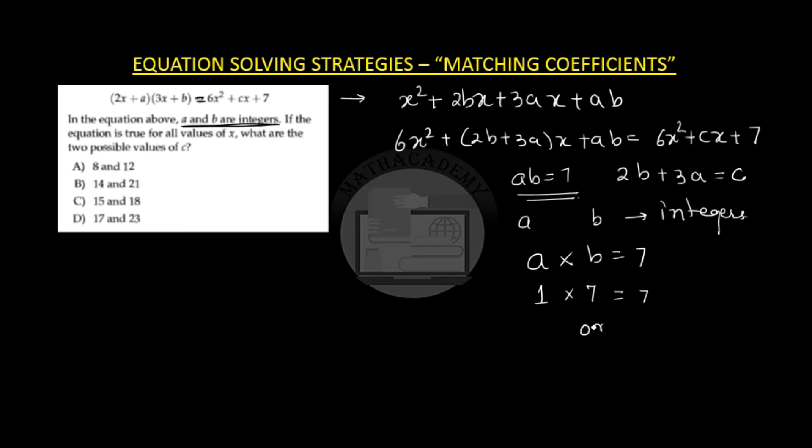So I get a 7 or I do 7 times 1. This is the only possibility where a and b are integers and the product is 7.